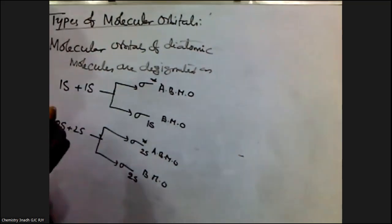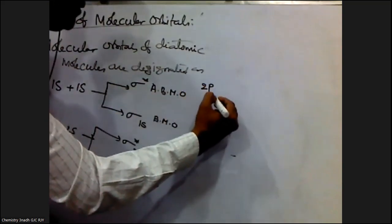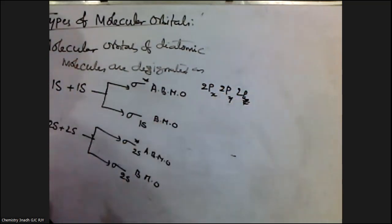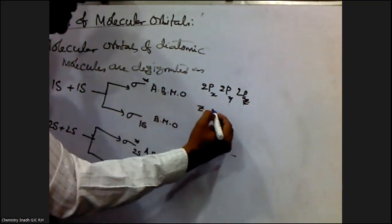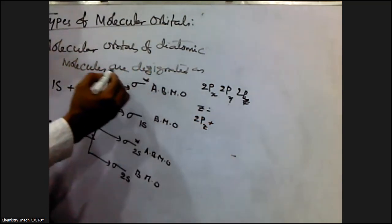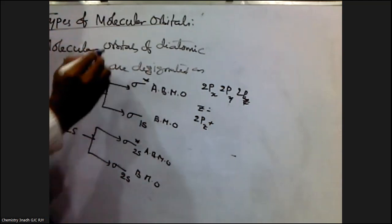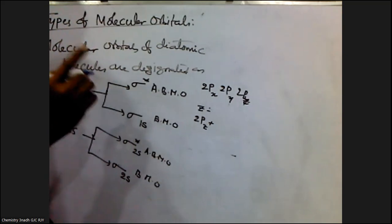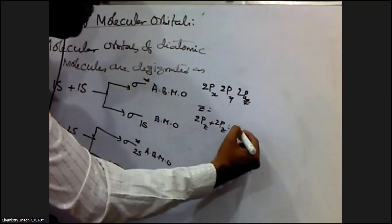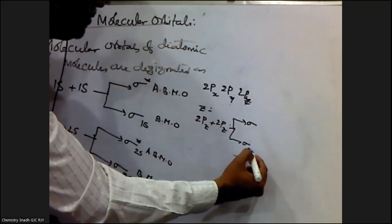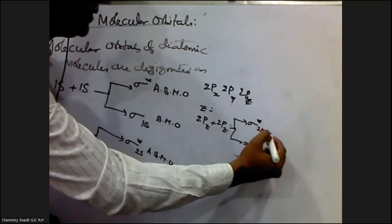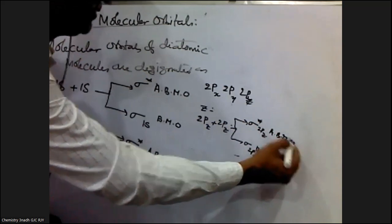Among the 2p orbitals, there are three: 2px, 2py, and 2pz. As discussed in the previous video, the z-axis is taken as the molecular axis. Since sigma bonds are formed by axial overlapping of atomic orbitals whereas pi bonds are formed by lateral overlapping, the 2pz orbitals will axially overlap and form two molecular orbitals: sigma 2pz, the bonding molecular orbital, and sigma star 2pz, the anti-bonding molecular orbital.